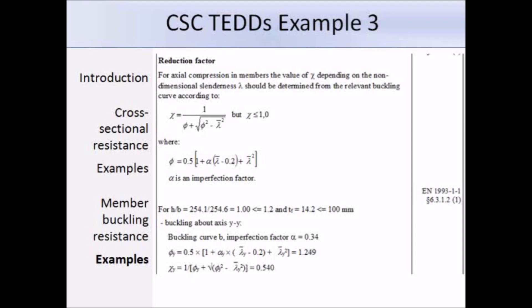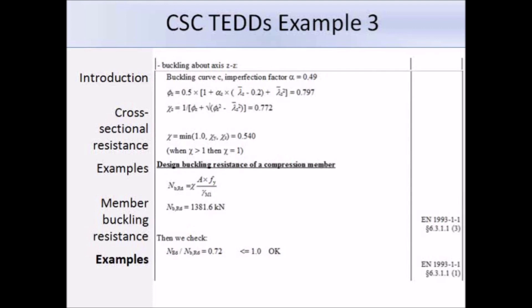For buckling about the z-axis, h/b = 1 which is less than 1.2, and the flange thickness is less than 100 mm, so we use buckling curve c from table 6.2. The corresponding alpha from table 6.1 is 0.49. With λ̄z and alpha known, phi = 0.797, and substituting gives χz = 0.772.